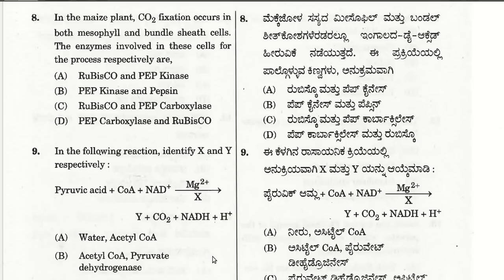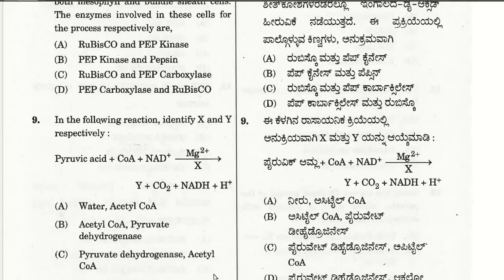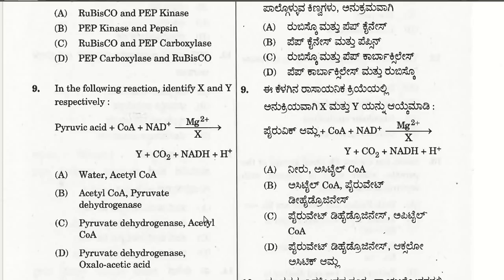The ninth question: for the reaction — pyruvate acid plus coenzyme A plus NAD, with magnesium ions — X represents the enzyme pyruvate dehydrogenase, and Y represents the products: acetyl coenzyme A plus carbon dioxide plus NADH plus H⁺. So the answer is C, where X is pyruvate dehydrogenase and Y is acetyl coenzyme A. This is the reaction before entry into the Krebs cycle.